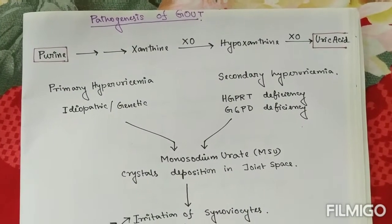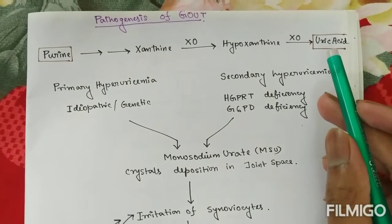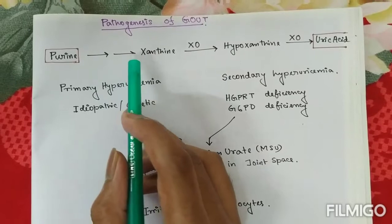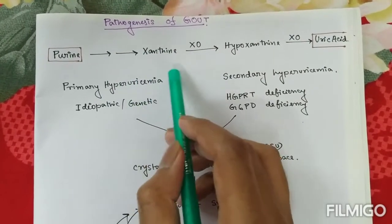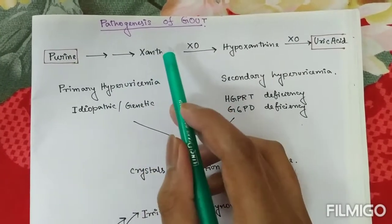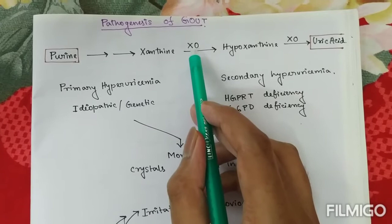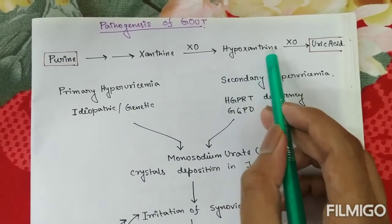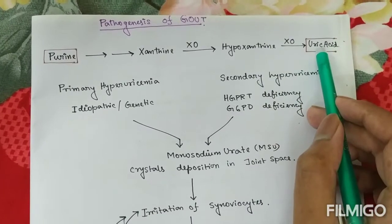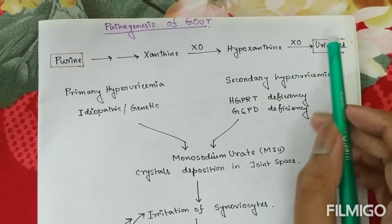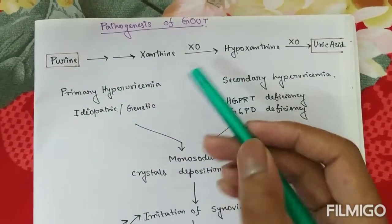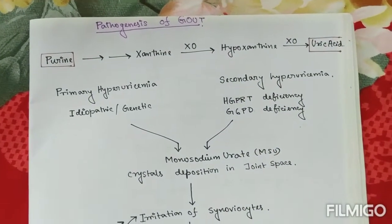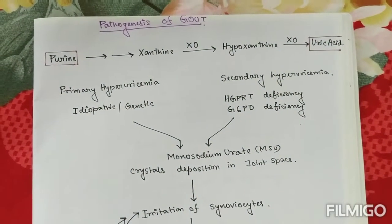First we'll see how uric acid is produced from purine. Purine, after sequential changes, converts into xanthine, and this xanthine with the help of xanthine oxidase first produces hypoxanthine and finally uric acid. Due to any cause, if this pathway is exaggerated, it will cause an excess amount of uric acid in the blood, or hyperuricemia.